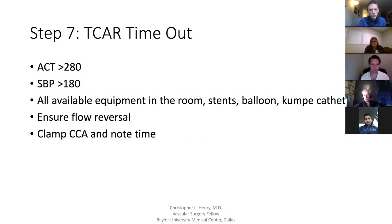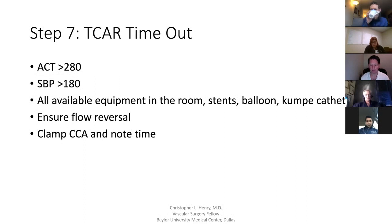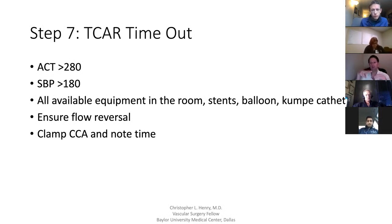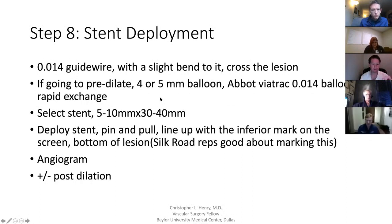Then we do our TCAR timeout: ensure our ACT is greater than 280, systolic is around 180, and that we have everything in the room — stents, a balloon, or a Comfy catheter if needed. Our rad tech is there and we're ready to go. We check the flow reversal. Once the TCAR timeout is done, we clamp the common carotid, making sure the tips of the Profunda clamp are not across the vagus nerve.